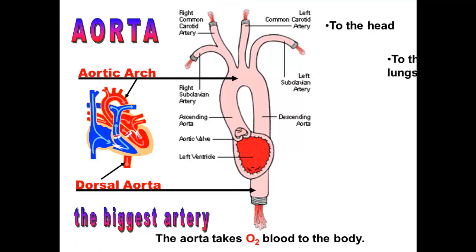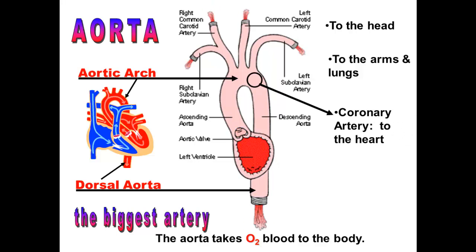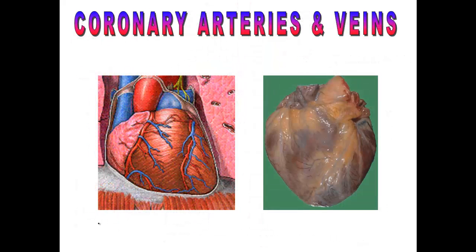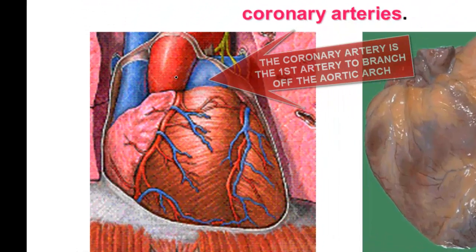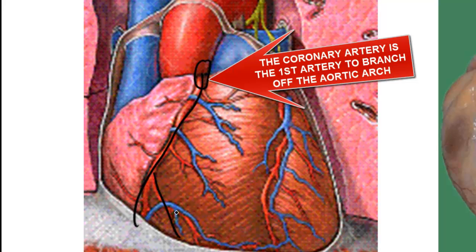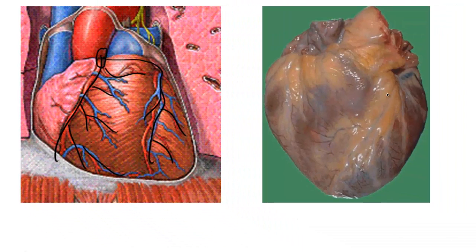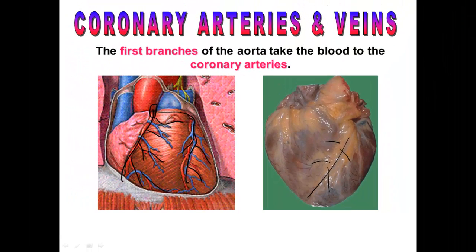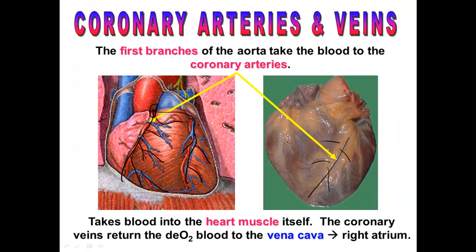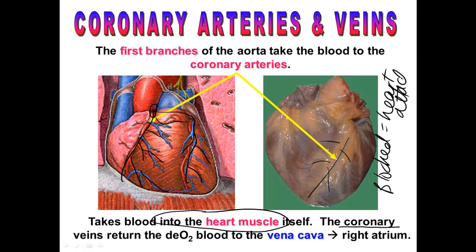The aortic arch takes blood to the head, arms, and lungs. One branch we didn't mention is the coronary artery, which also branches off — it's the very first branch that comes off of the aorta. The coronary arteries take blood directly to the heart itself, because of course the heart needs oxygen too. They branch all around the heart and feed oxygen to it. The coronary veins take blood back to the vena cava, going directly back into the right side of the heart. If the coronary arteries are blocked, you'll probably end up with heart disease or even a heart attack.